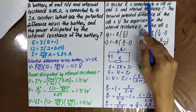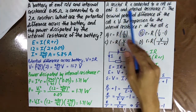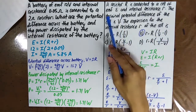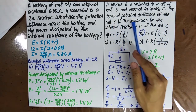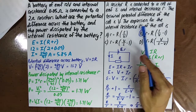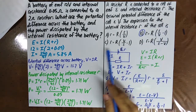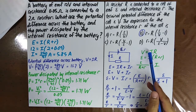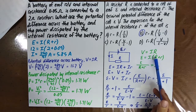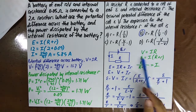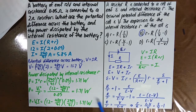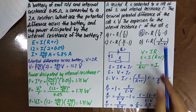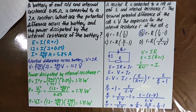A resistor R is connected to a cell of EMF E and internal resistance r. The terminal potential difference of the cell is V. Using V equals IR and E equals I(R plus r), from these two equations you can derive that small r equals capital R times (E over V minus 1).